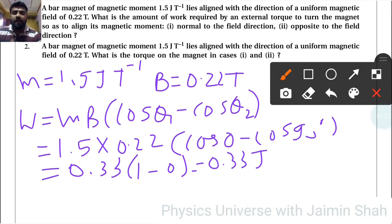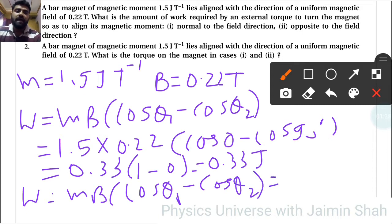Now opposite to the field direction. For that, W again is equal to mB(cos θ₁ - cos θ₂). So again m × B is 0.33. This starts from 0, so cos 0 is 1, minus cos θ₂ is 180 because now it is opposite.